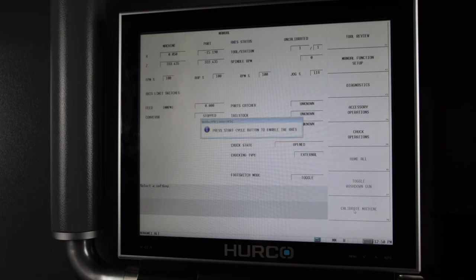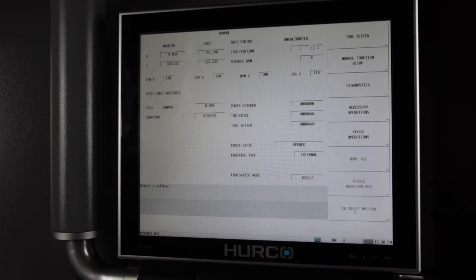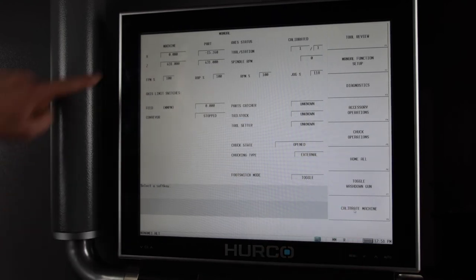Select power on and start cycle to enable the machine. Then select calibrate machine and recalibrate.